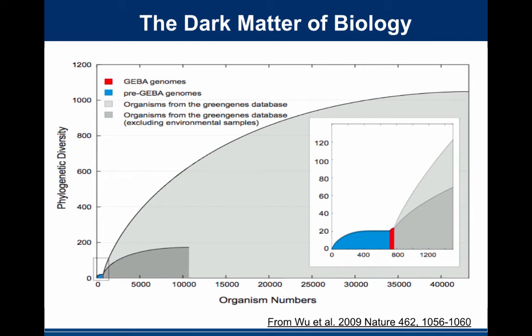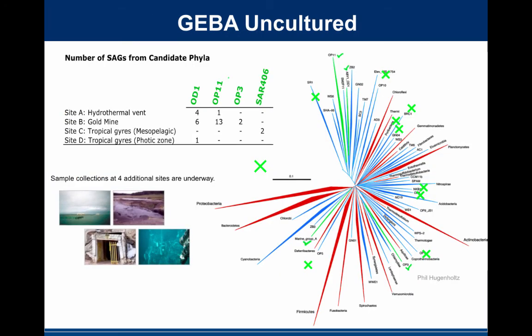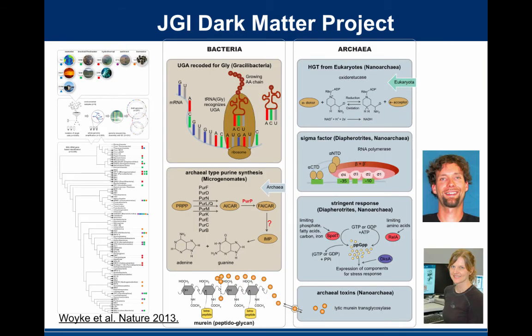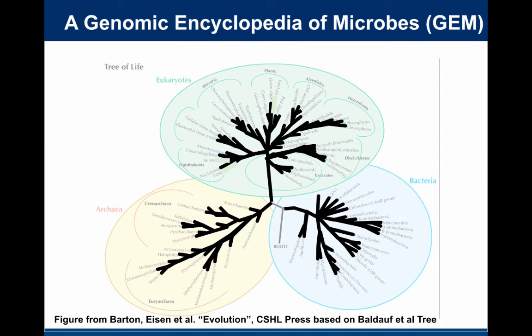One big limitation is that this was focused on cultured organisms, and most of the diversity of bacteria, archaea, eukaryotes, and viruses is in organisms that have never been grown in the lab. So Tanya Woyke at the JGI launched a project to get genomes from uncultured branches in the tree of life. They focused on flow-sorting single cells, identifying single cells from novel lineages, and doing whole-genome amplification and single-cell genomics. They called this the JGI Microbial Dark Matter Project, and showed all sorts of functional diversity and interesting things that come from sampling across the tree of life for genomes.